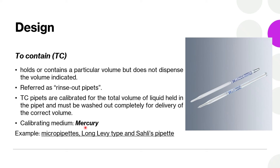The calibrating medium used for to-contain type of pipettes is mercury, because mercury does not adhere to the sides of the vessel and drains out completely. Examples of to-contain pipettes include micropipettes, the Lang-Levy type, and the salihemoglobin pipette used in hematology.